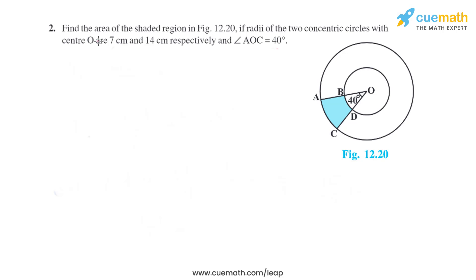Question 2 of this exercise says: find the area of the shaded region in the figure, given radii of two concentric circles with center O as 7 centimeters and 14 centimeters respectively, and angle AOC equals 40 degrees.